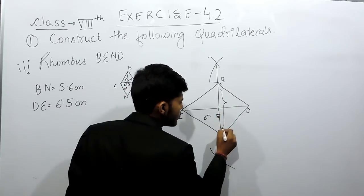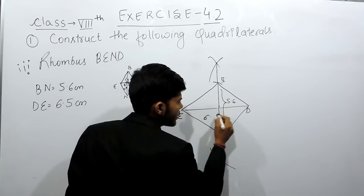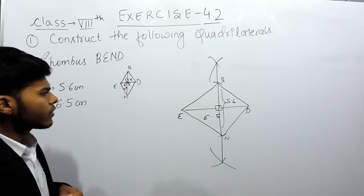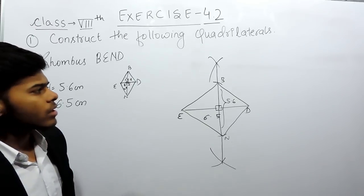Now, this complete will be equal to 5.6. These are 90 degrees and this is the rhombus that you have to construct. So this is how you can solve this question.